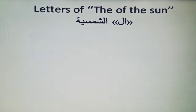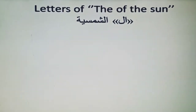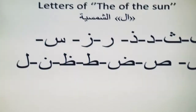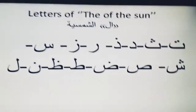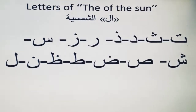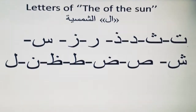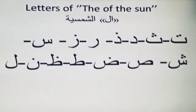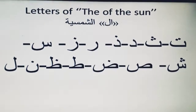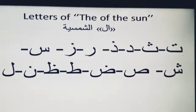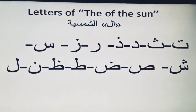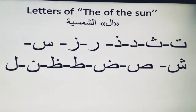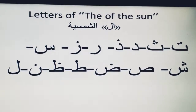The 14 letters of Al-Shamsiyya — when these begin the noun, the Lam of Al is not pronounced and the first letter is doubled with a Shadda — are: Ta, Tha, Dal, Dhal, Ra, Zain, Sin, Sheen, Sad, Dad, Ta, Dha, Nun, and Lam. These are also 14 letters.